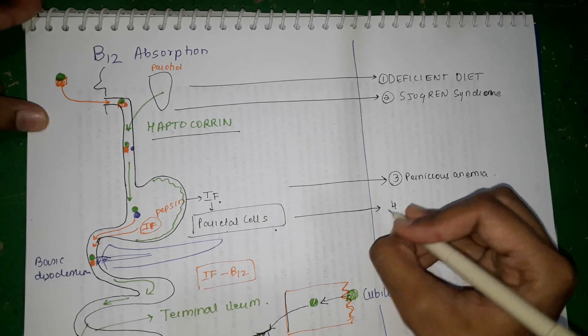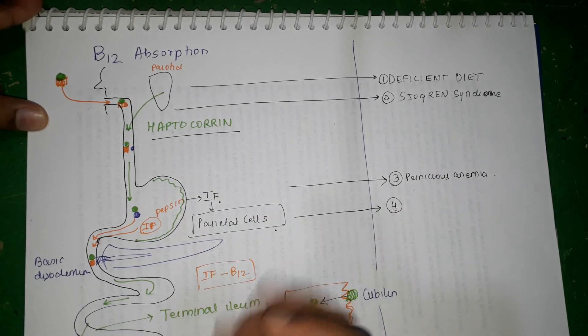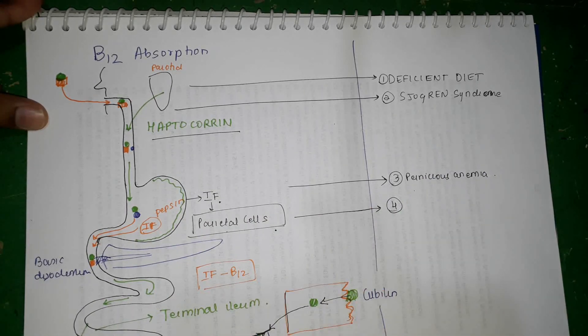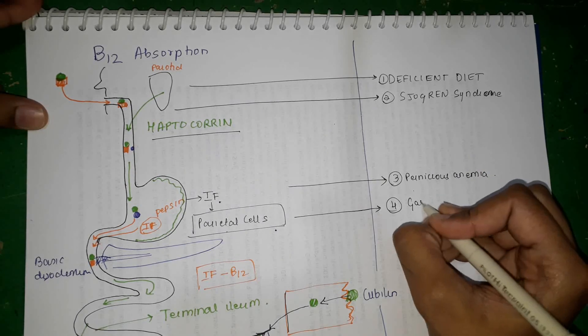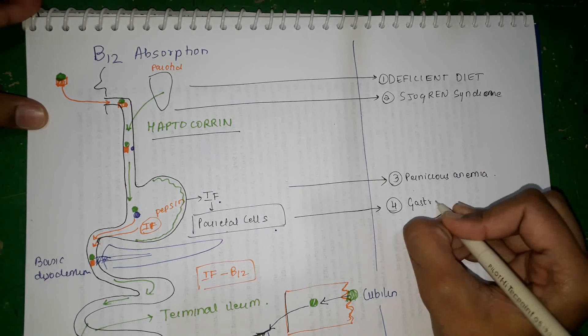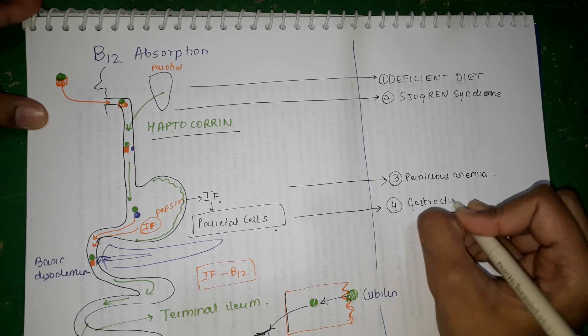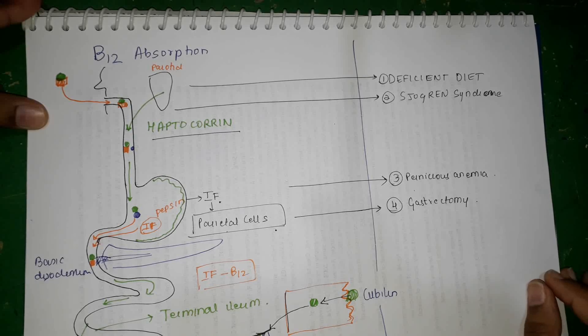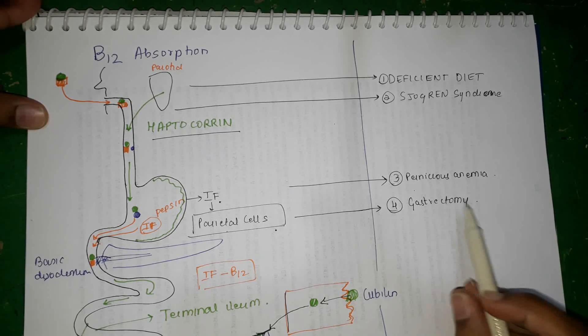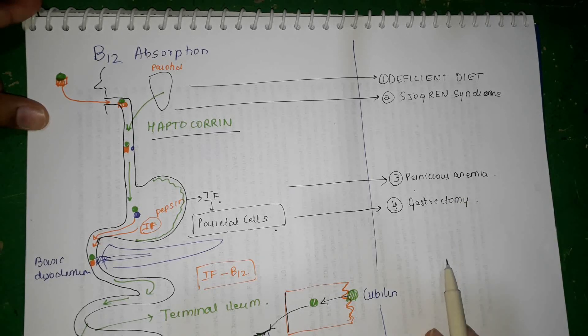One more important cause is if there is no stomach itself — no stomach means no parietal cells, and no parietal cells means no production of intrinsic factor. This occurs if a patient has undergone gastrectomy. So there are two causes at the level of the stomach: pernicious anemia and gastrectomy.